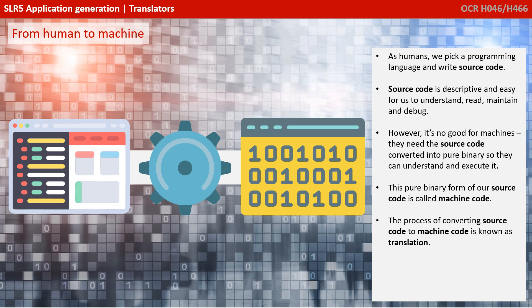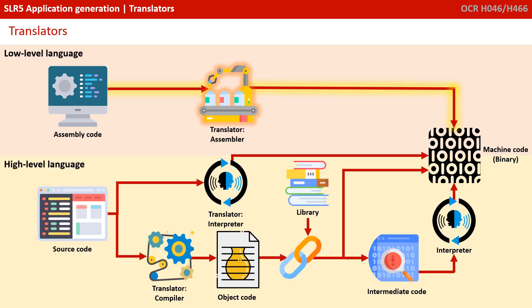The process of converting your source code into machine code is known as translation. No matter how it happens, there are three types of translators that take source code and ultimately turn it into machine code: assemblers, interpreters, and compilers — and you're required to know about the difference.